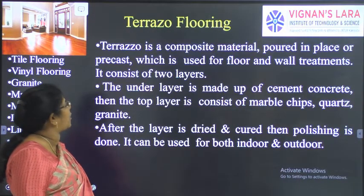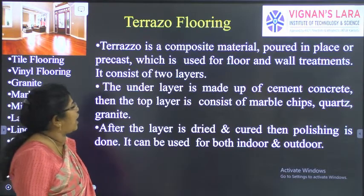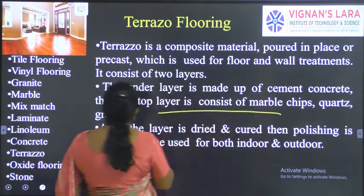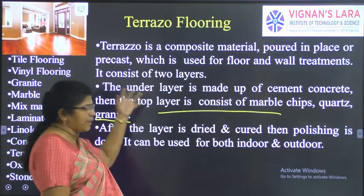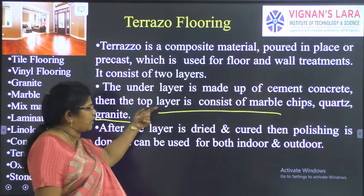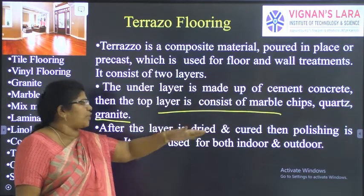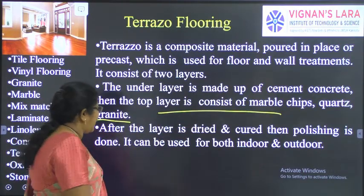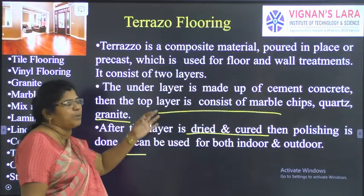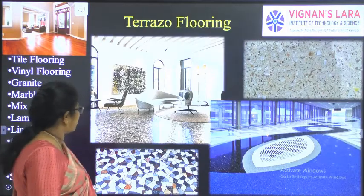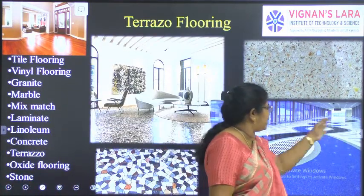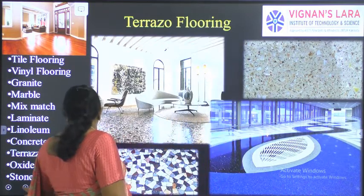Terrazzo is a composite material that is poured in place or precast, used for flooring. It consists of two layers — the under layer is made of cement concrete and the top layer consists of marble chips, quartz, and granite. This material is precast and brought to the site. The terrazzo layer is dried, cured, and then polished. It can be used both indoors and outdoors and is very durable for weathering conditions. Mosaic flooring also comes under terrazzo flooring.